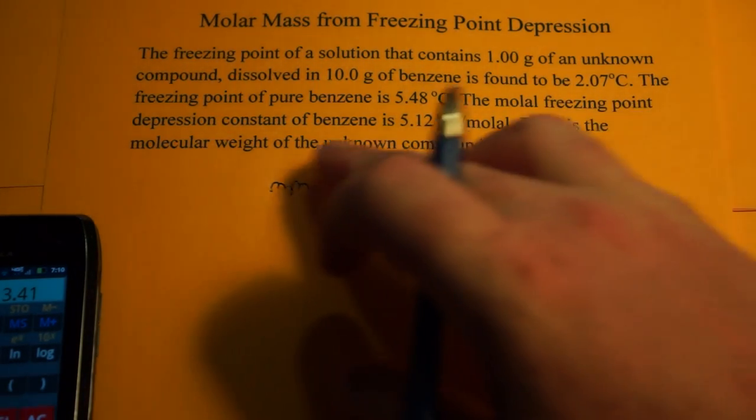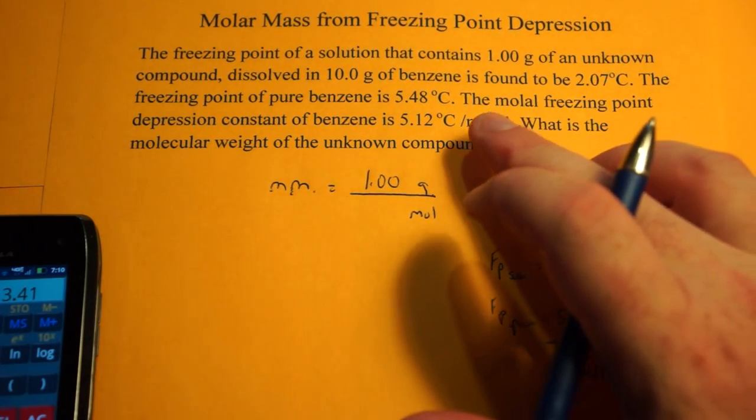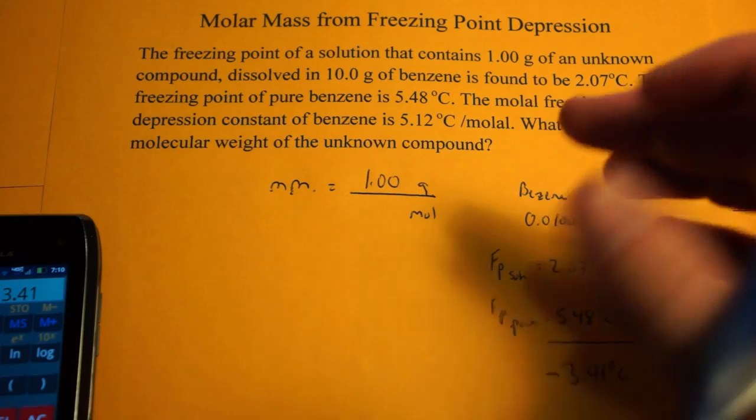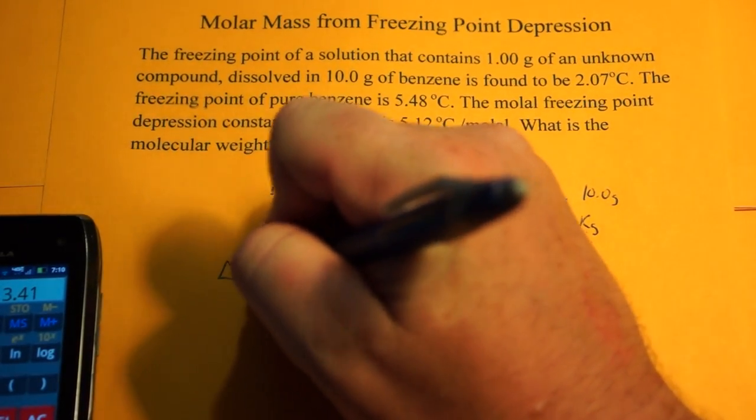And the molal freezing point depression constant for benzene is 5.12 degrees Celsius per molal. What's the molecular weight? So we're going to use delta T equals MKf.